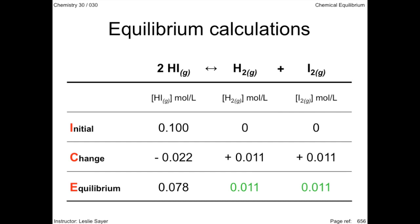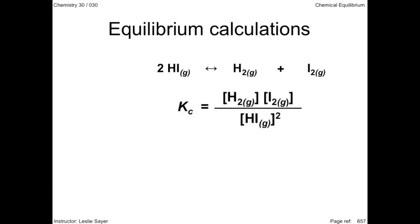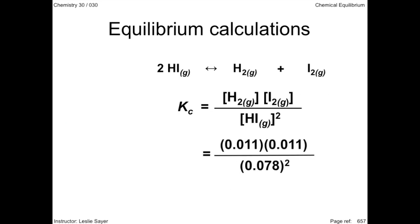Now we can go about applying these concentrations to the equilibrium expression. Properly rounded, the equilibrium constant is approximately 0.200. Notice there are no units in the expression of the equilibrium constant.